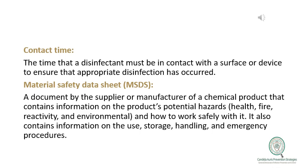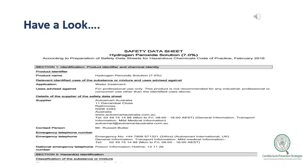The MSDS also contains information on the use, storage, dilution required, handling, and emergency procedures, as well as the contact time. This slide shows an example of how the MSDS or Material Safety Data Sheet looks, and from the sheet you can find all the information previously explained.